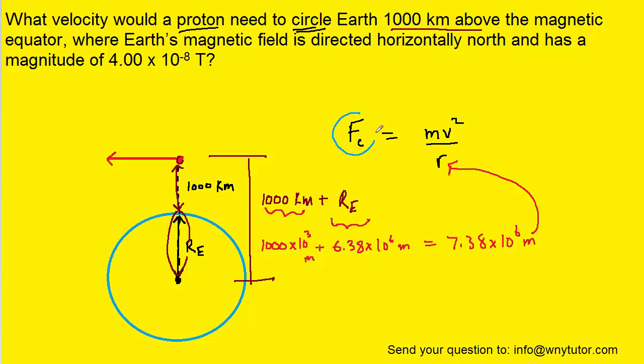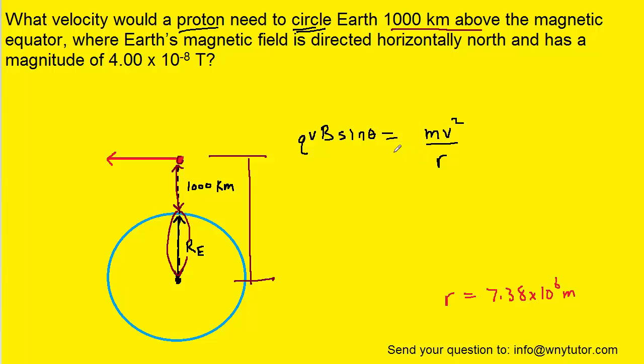Now, the centripetal force is going to be supplied by the magnetic force. We've learned in this chapter that a magnetic force is equal to the charge times the velocity times the magnetic field multiplied by the sine of an angle. So we can substitute this expression for the magnetic force into Fc. Now, our objective in the question is to find the velocity, so we have to solve this equation for v.